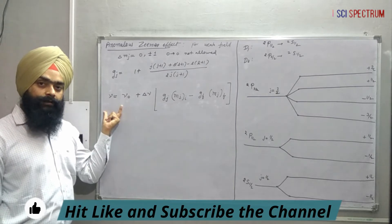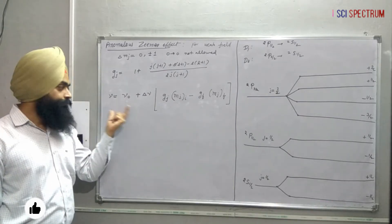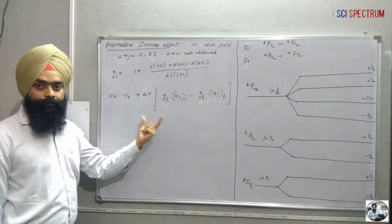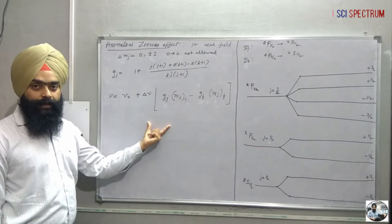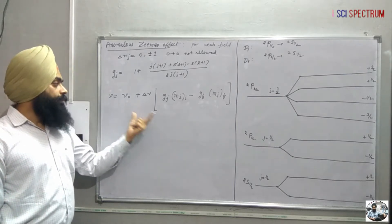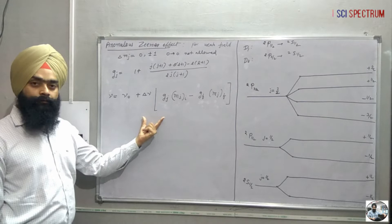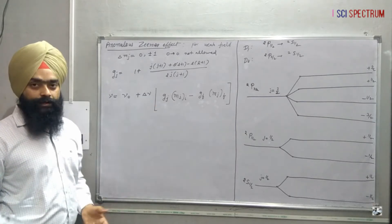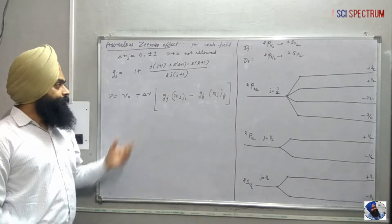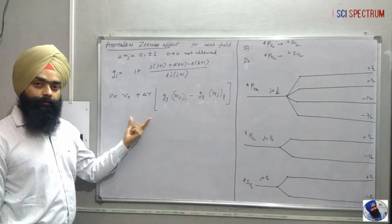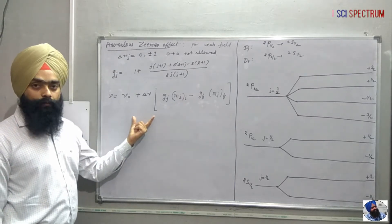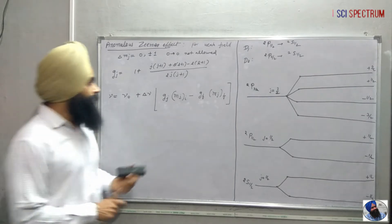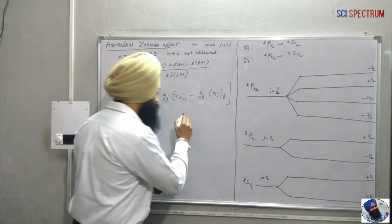This formula is very important and is similar to the normal Zeeman effect. In that case, the torque was occurring due to the orbital dipole moment mu_l. In the present case, the torque is applied due to the dipole moment mu_j, and that torque arises from the cross product of the magnetic field and mu_j according to this formula.